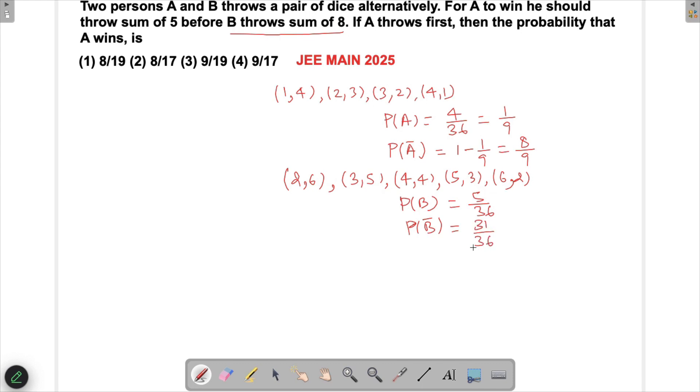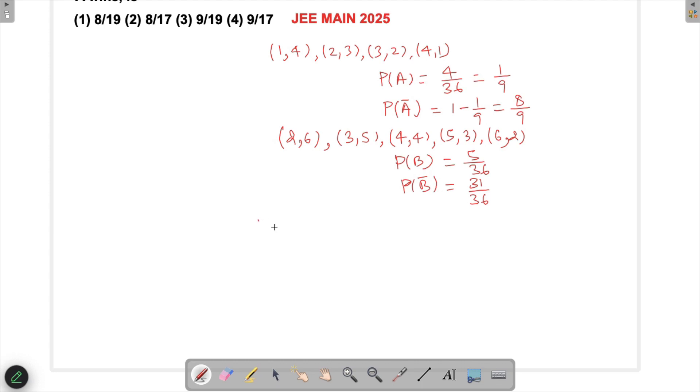Now let's understand the game. For A to win, either A has to succeed in the first throw itself, or what has to happen is A doesn't get it in the first throw, then B also should not get it on the first throw, and then in the third throw A should get it. This is the second possibility.